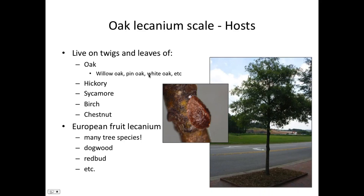The hosts of oak lecanium scale are primarily oaks — we see them most on willow oak, also on pin oaks, white oaks, red oaks, and all kinds of oaks. We find them on related species like hickory, sycamore, birch, and chestnut, and we see them a lot on new elms being planted. There's a related species called the European fruit lecanium that looks the same, has the same life cycle, and infests dozens of other tree species such as dogwoods, birch, redbud, serviceberry, and winterberry. Management and life cycle are the same, so the distinction is largely immaterial.